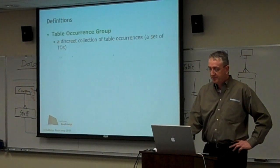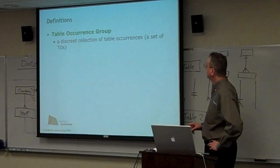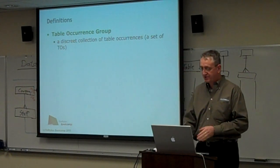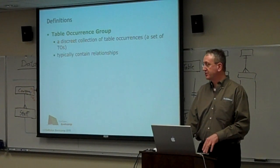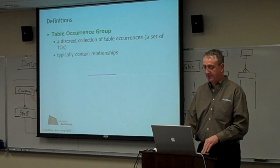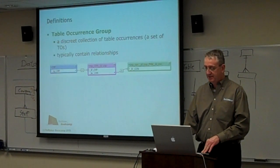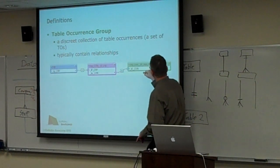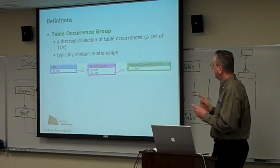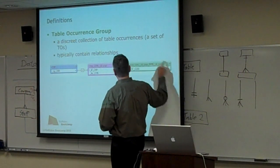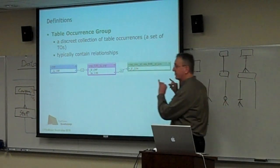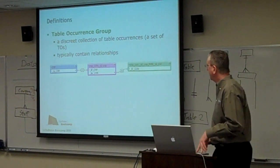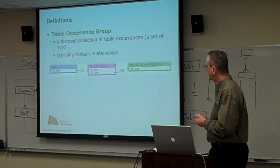Simple stuff, but real important. A group of table occurrences is a discrete collection of table occurrences together in an area of the graph with some kind of convention around them that makes them discrete. Typically they contain relationships between the table occurrences in the table occurrence group. For example, a company table, a context table, a phone table — that's one table occurrence group because they're all related and nothing else is related to them. A group is a loose description; it's not a hard-coded thing.